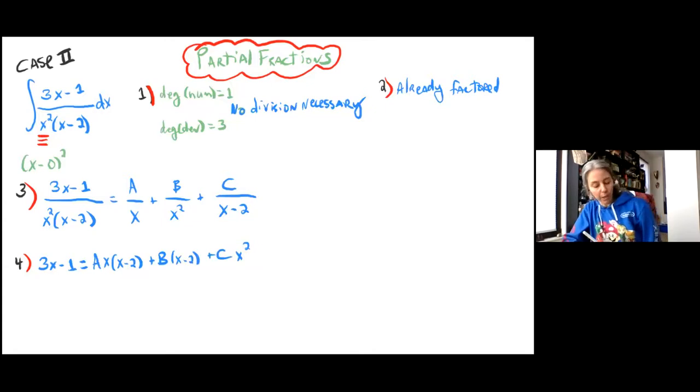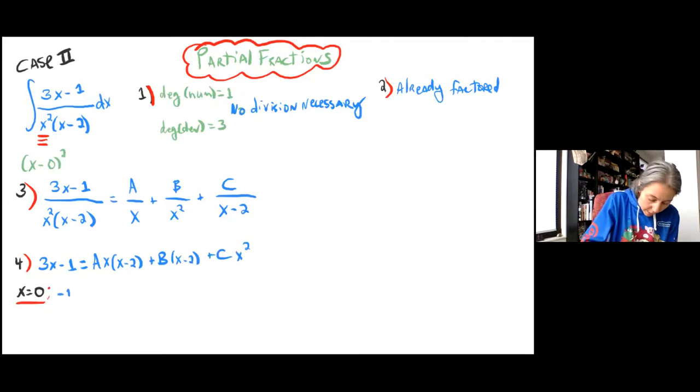Now we want to plug in the zeros. We've got two zeros here: x equals 0 and x equals 2, the things that cause that original denominator to be 0. So we'll start by plugging those things in. When I plug in x equals 0, I get negative 1 is equal to 0 plus B times negative 2 plus 0, to get B is equal to a half.